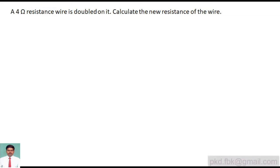A 4 ohm resistance wire is doubled on it. Calculate the new resistance of the wire. The important term is 'doubled on it.' Doubled on it means the length becomes half and the area of cross-section is getting doubled. That is the meaning of doubled on it.